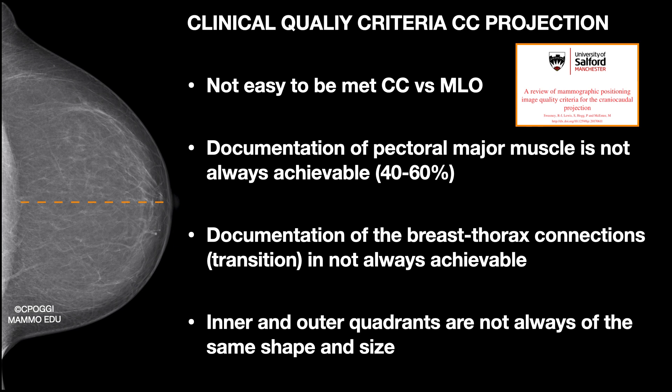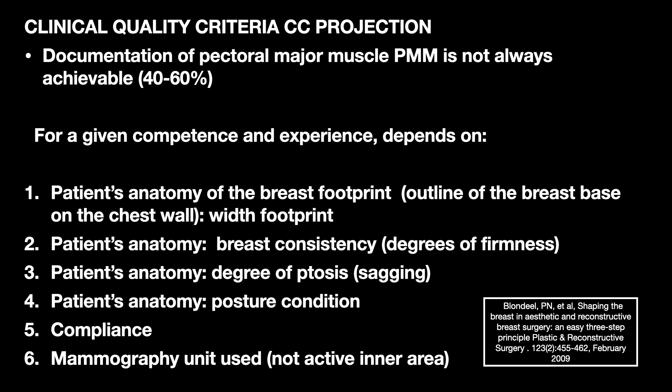To make things worse, inner and outer quadrants are not always of the same shape and size. What does the possibility to show pectoralis major on CC projection depend on? For a given radiographer's competence and experience, many things are crucial: the width of the breast footprint — that is to say, the outline of the breast base on the chest wall — breast consistency or firmness, meaning how easy it is to manipulate the breast, and ptosis or sagging, which is how easy it is to pull the breast away from the thorax.